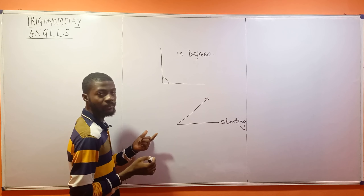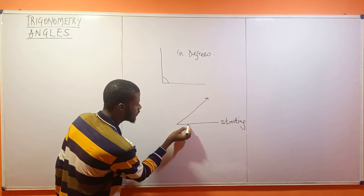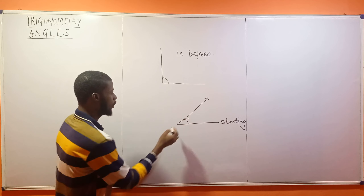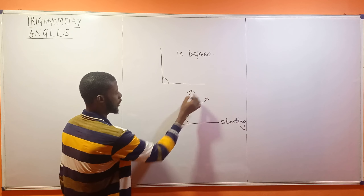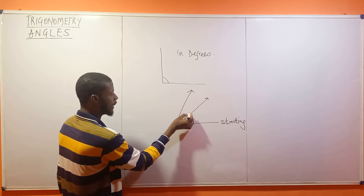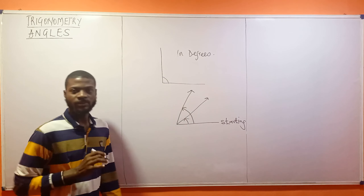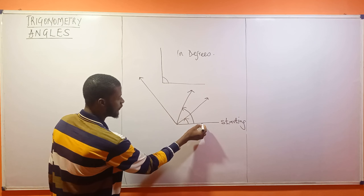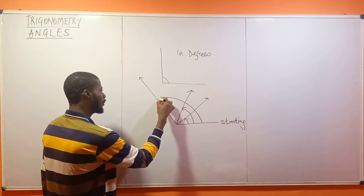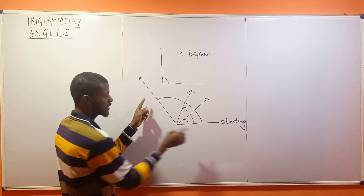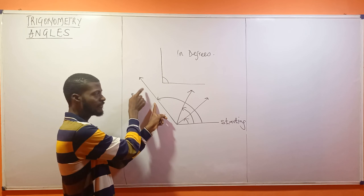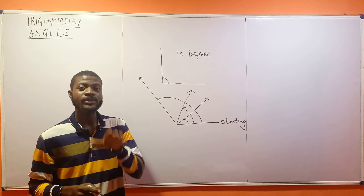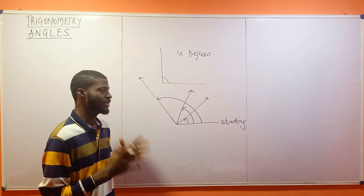What would then become the angle? The angle will be from this point upwards. We can have another line at this very point — since this is the starting point, another angle can be from here to here. Since it's still coming from this side, we'll be having an angle that measures the space from this starting point to this finishing point. We normally measure angles in degrees.